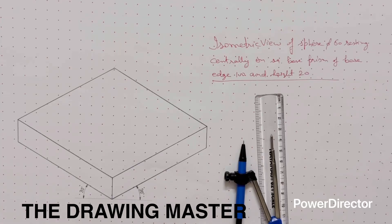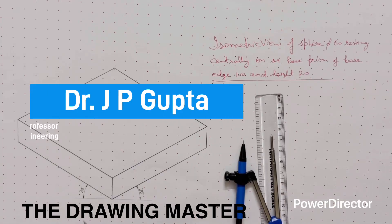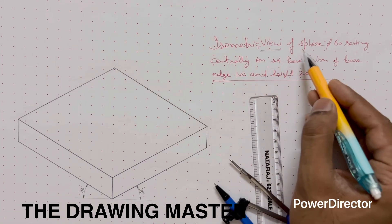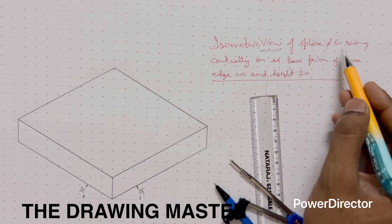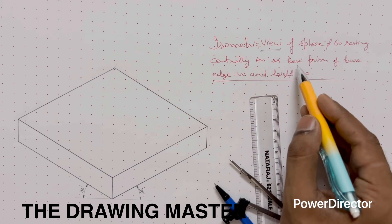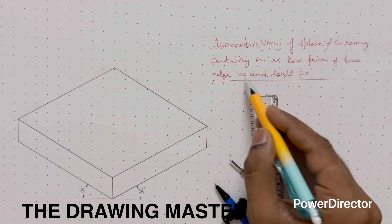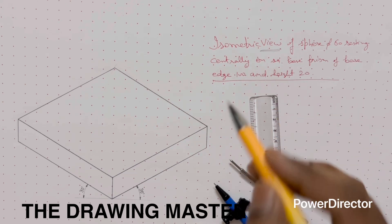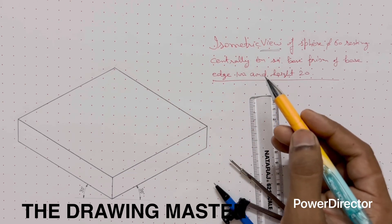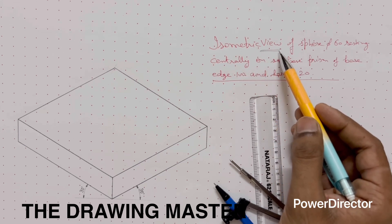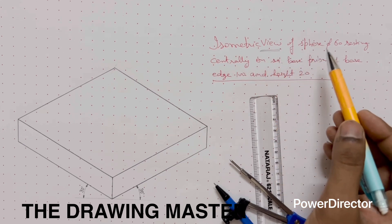Hello friends, welcome to my channel. In this video we will discuss the isometric view of a sphere of diameter 60, which is resting centrally on a square base prism of base edge 100 and height 20. This video is very important because here we will also learn the difference between isometric view and isometric projection with the help of a sphere.